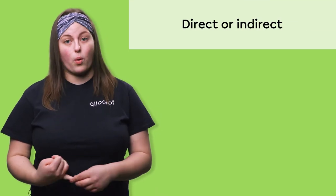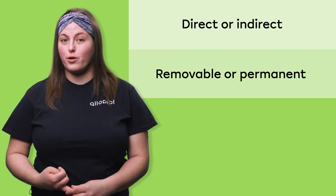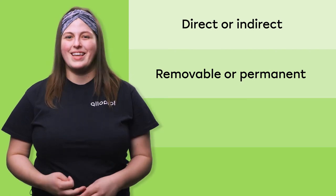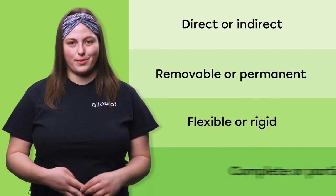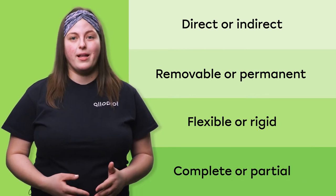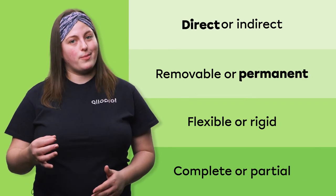Links are defined according to four characteristics. A link is either direct or indirect, removable or permanent, flexible or rigid, and complete or partial. For example, a link could be direct, permanent, rigid, and complete.